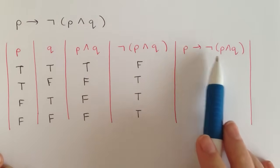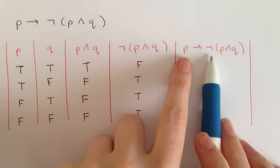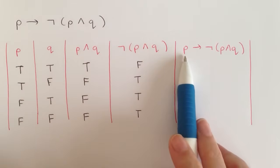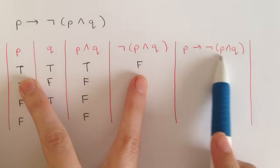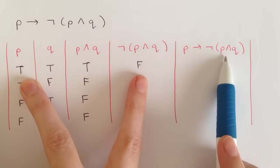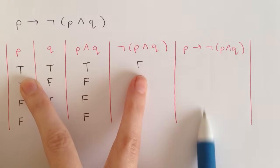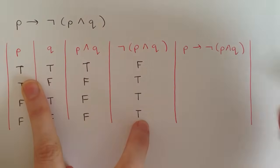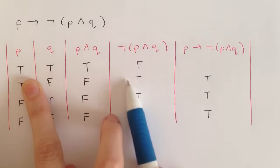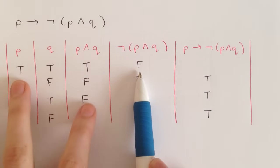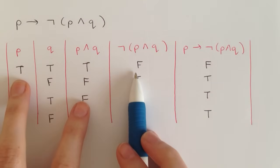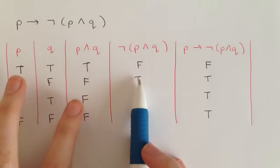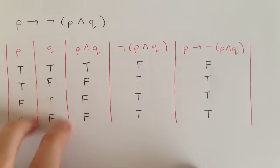Now we go to the final column: if p then not p and q. We're looking at the not p and q column and the p column. What you do with an arrow is: if the right-hand side — what the arrow is pointing to — is true, then it's always going to be true. So the first three rows are automatically true. For the last row, we have false implying true, which is false. If you have false implying false, that's true. If you have true implying true, that's true. It takes a bit of getting used to, but once you memorize that you'll have no problem.